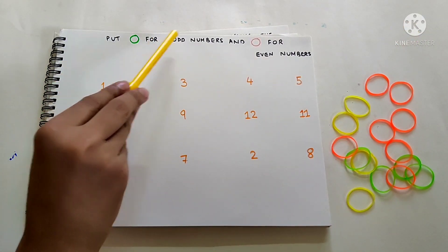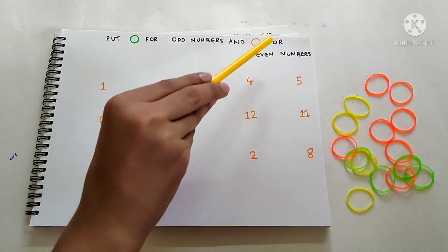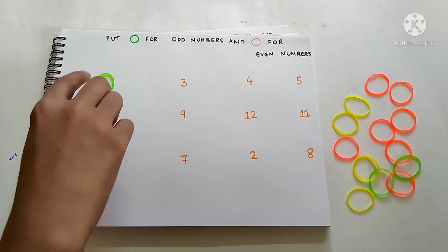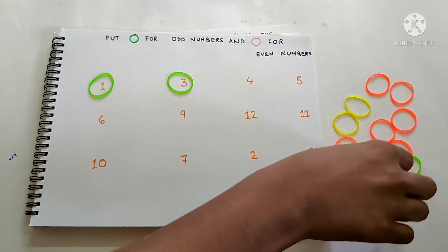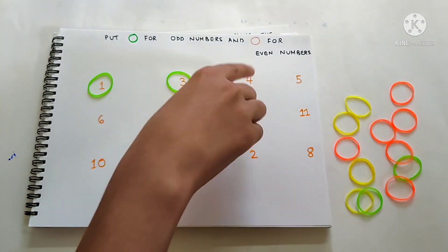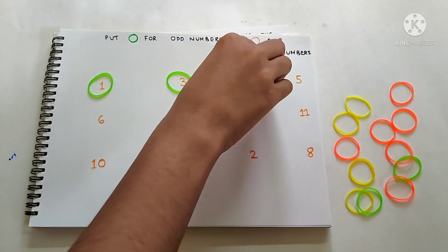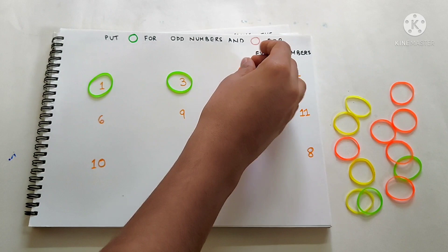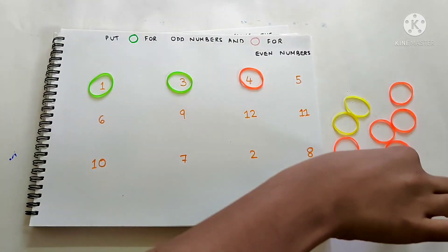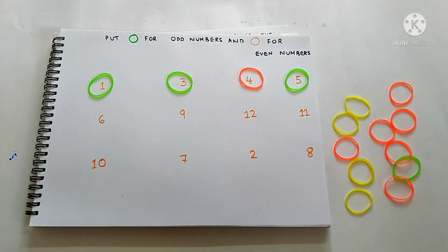Put green for odd numbers and orange for even numbers. 1, odd number so we have to put green. 3, odd number so we have to put green. 4, even number so we have to put orange. 5, odd number so we have to put green.